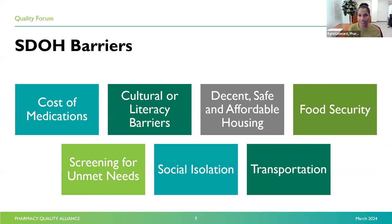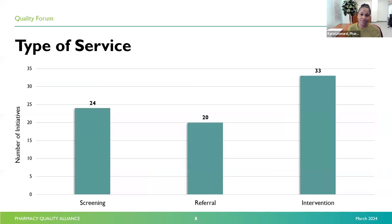All of the SDOH resource guide entries address multiple barriers to quality medication access. Most initiatives address multiple barriers, similar to the ones faced by the patient populations that they serve. Because patient screening, referral, and intervention contribute to a more comprehensive approach to healthcare delivery, our goal at PQA was to feature programs and services that move beyond simply identifying SDOH factors. This graph depicts the number of initiatives by type of service offered, including 24 different screenings, 20 referrals, and 33 interventions. Our initiatives usually offer more than one type of service, so those values add up to more than 40.